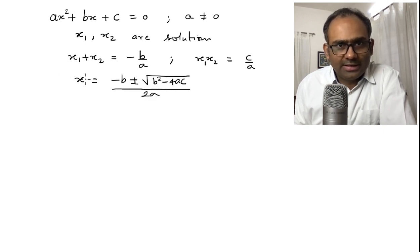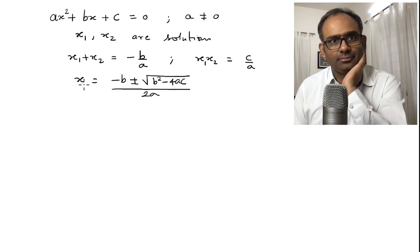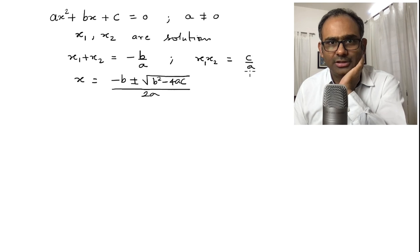One solution is x1 when you take a plus sign another solution is x2 when you take the negative sign. Then you can check that if you make the sum then it will give you minus b over a if you make the product it gives you c over a.